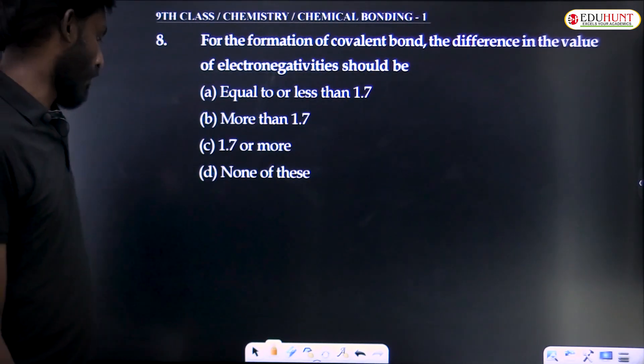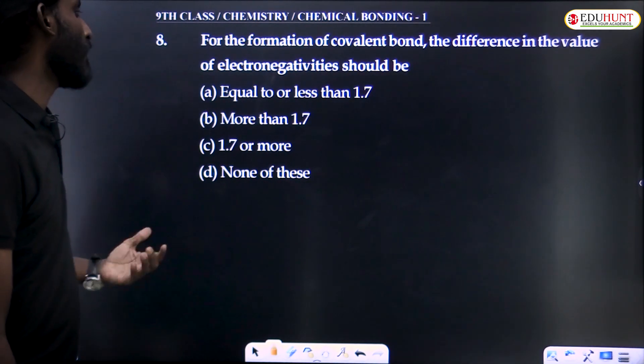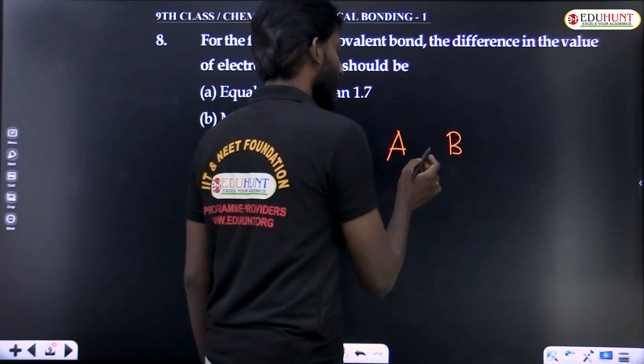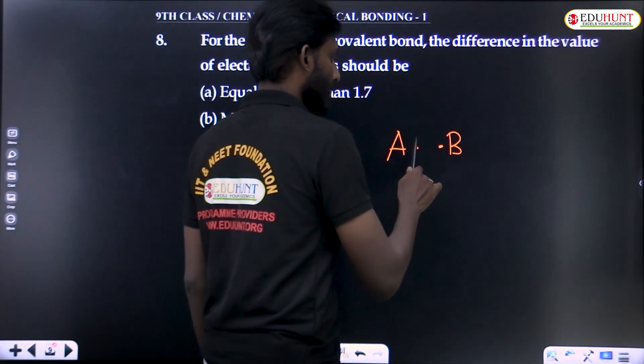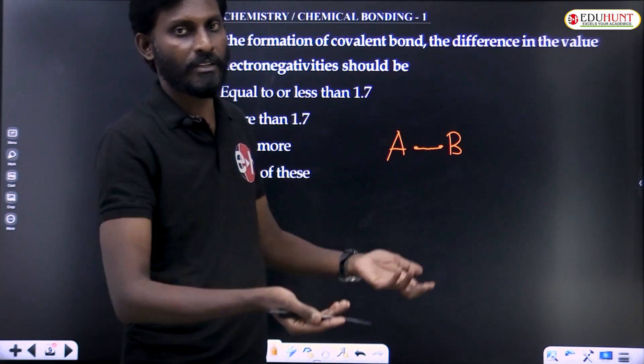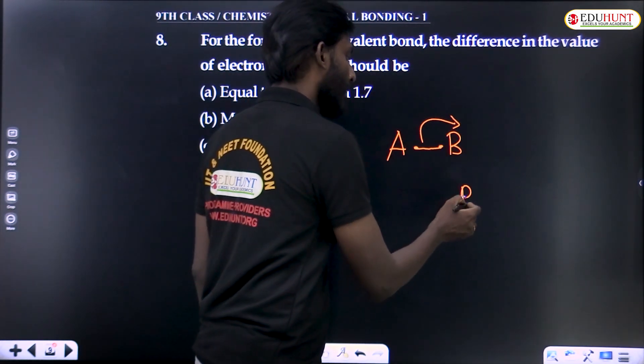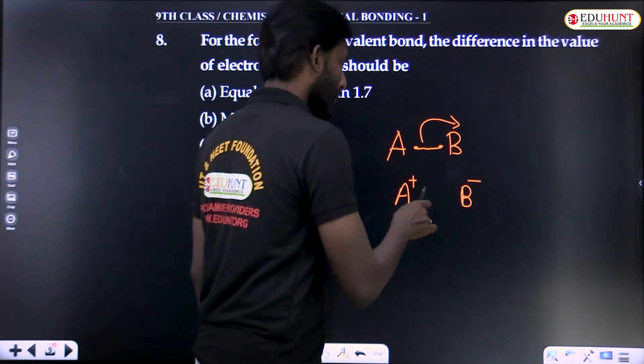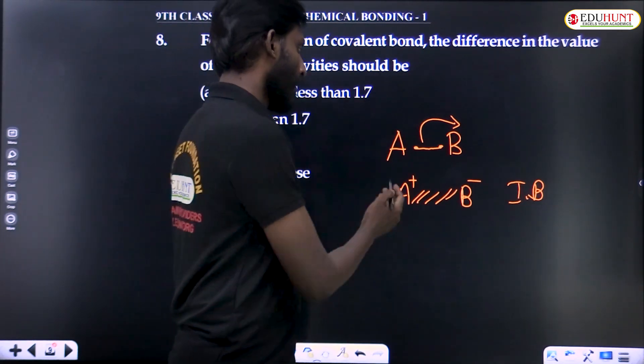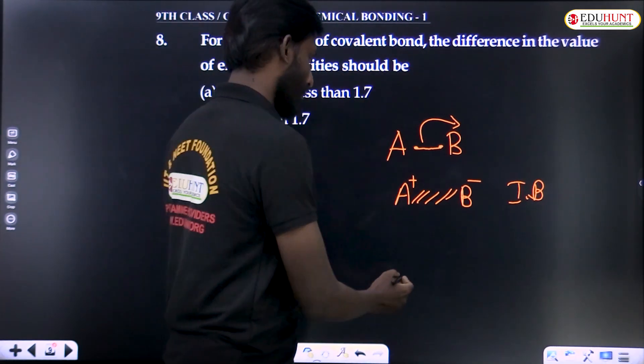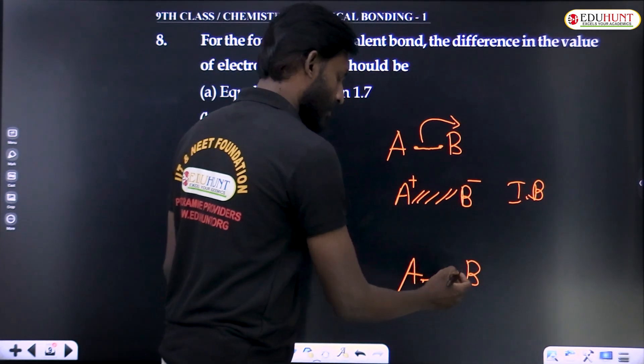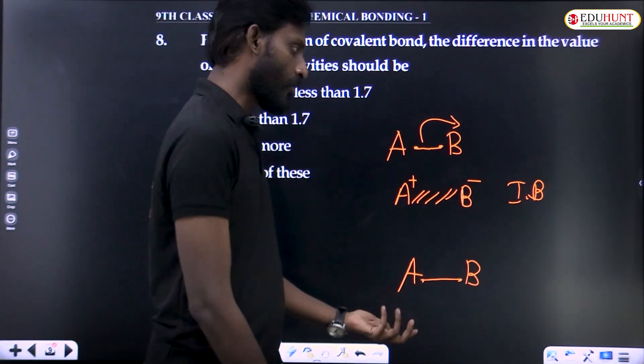For the formation of covalent bond, the difference in the value of electronegativity should be what? Two atoms, A and B. One electron contributed from here, one electron contributed from here. They share the pair. Electronegativity - if their electronegativity difference is very high, then the pair completely goes to B, B becomes minus, A becomes plus. Then attraction comes, that bond is ionic bond.